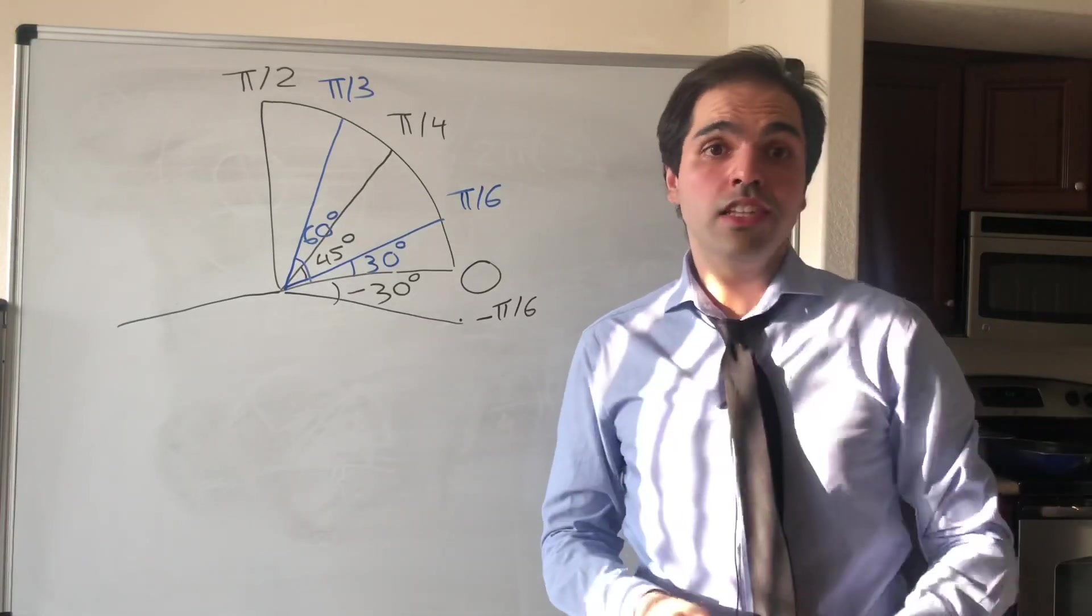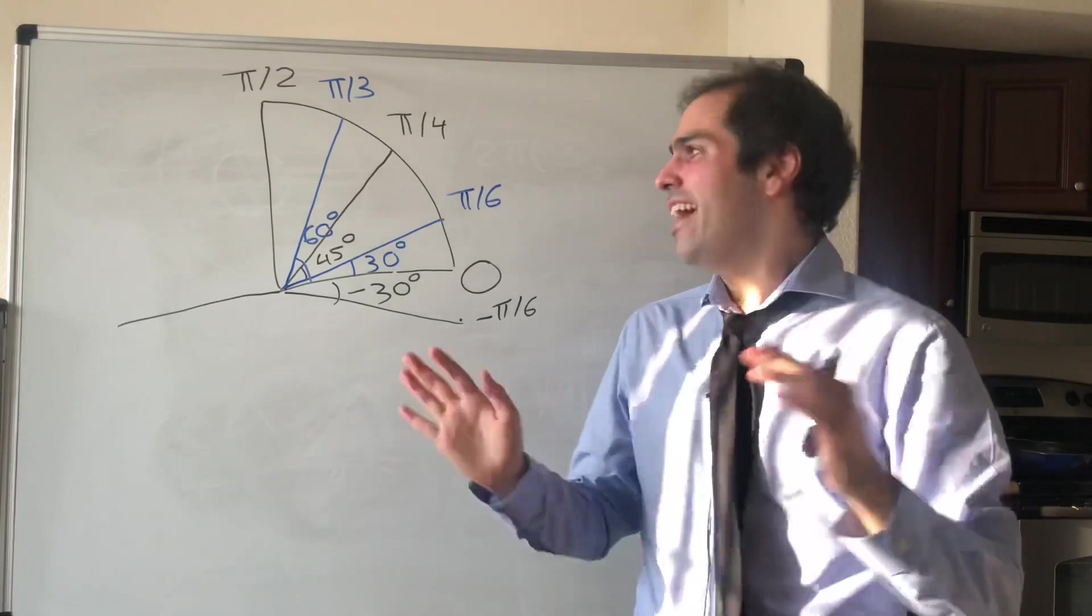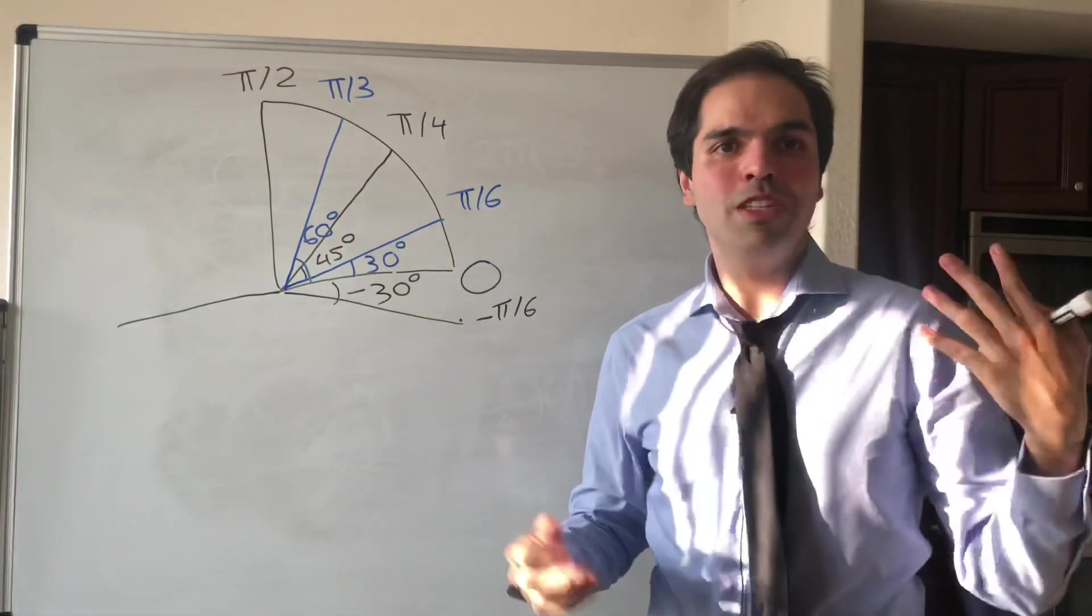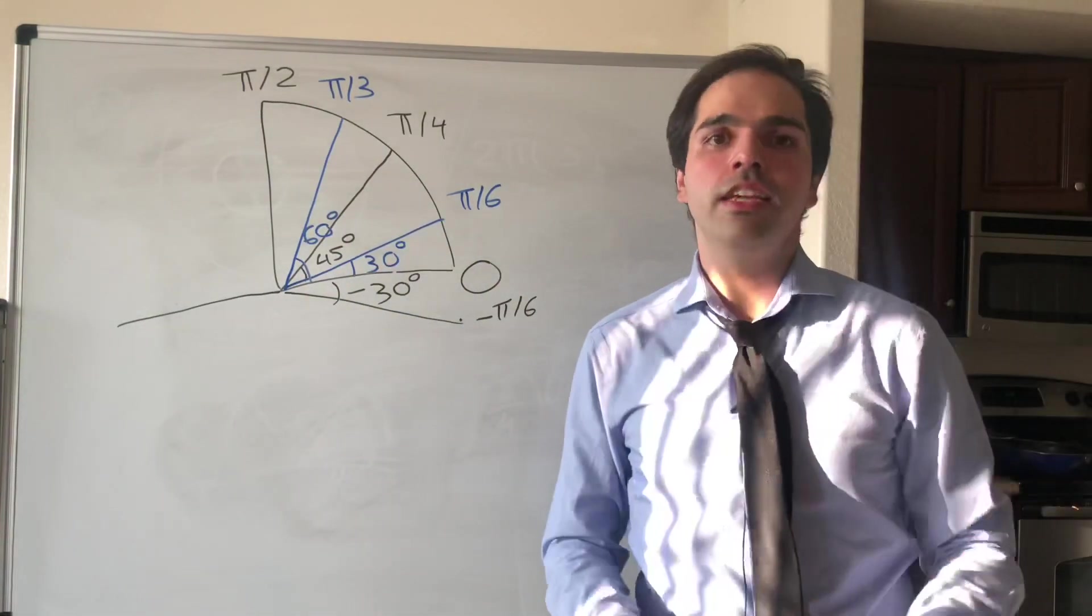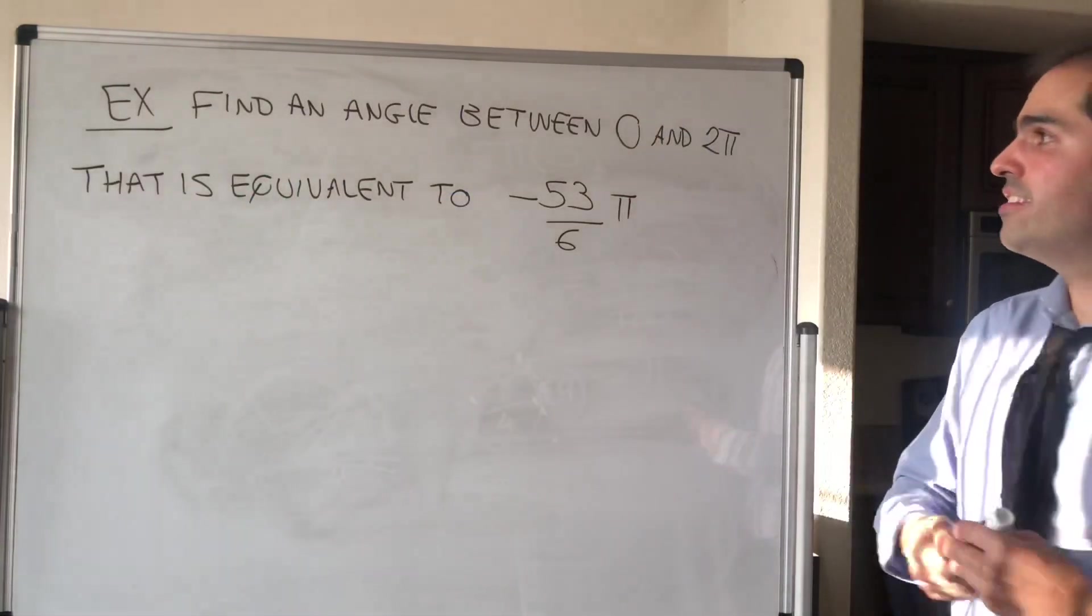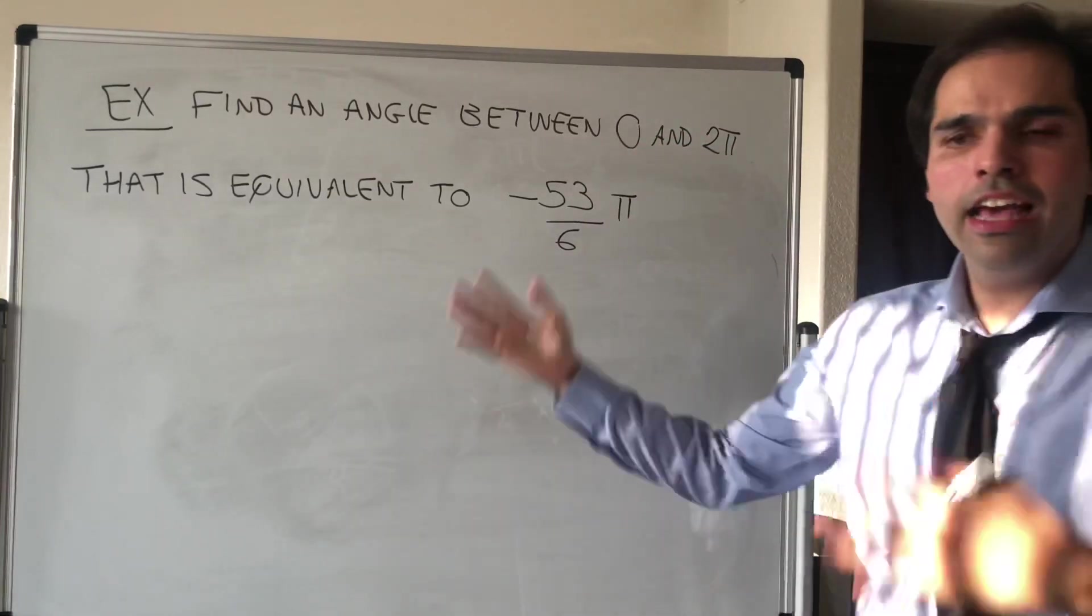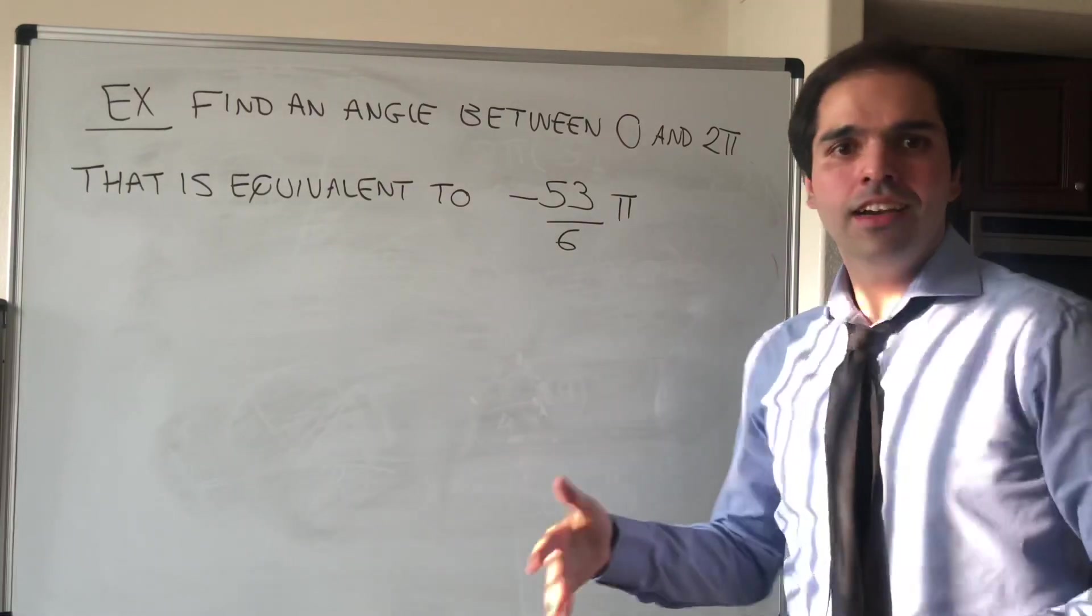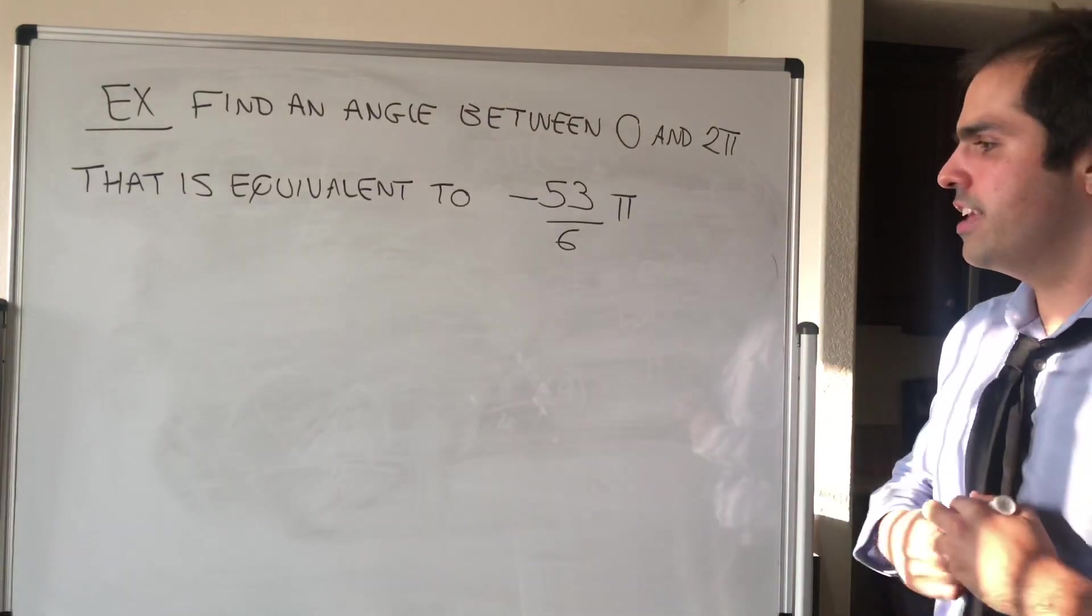Last but not least, it turns out some radian measures are very big. And what we would like to do usually is to have radian measures between 0 and 2π, because that corresponds to the circle. But luckily there's an easy way of converting between the two. So I guess last exercise: let's find an angle between 0 and 2π that is equivalent to -53π/6. I think the notes use coterminal, but it's the same thing, or it is equivalent.